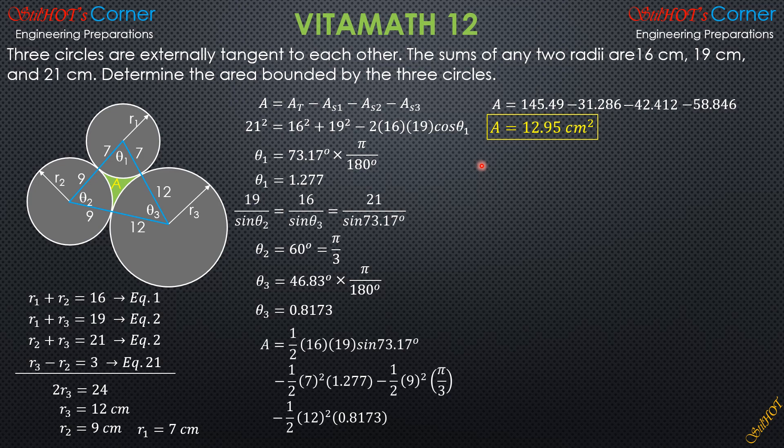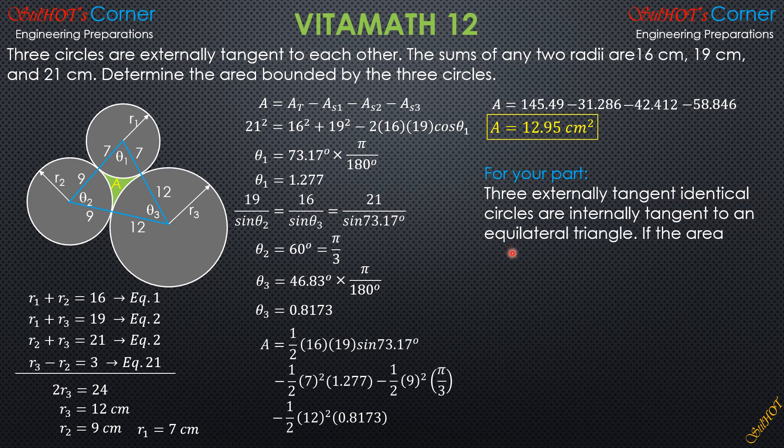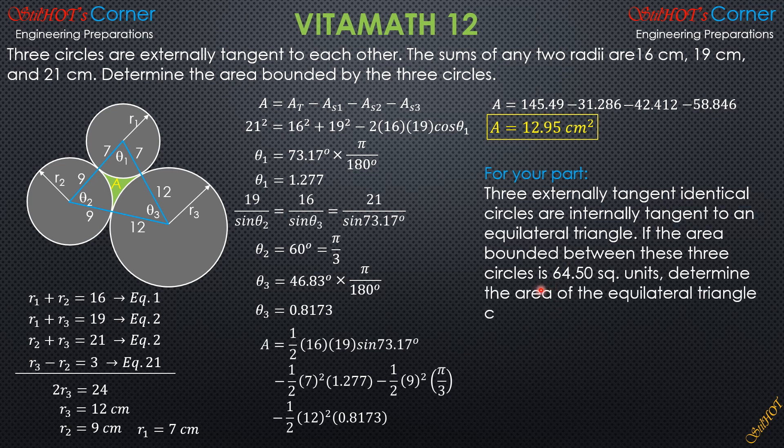Now, for your part, so that you will also learn from my channel, here is your problem. Three externally tangent identical circles are internally tangent to an equilateral triangle. If the area bounded between these three circles is 64.5 square units, determine the area of the equilateral triangle circumscribing them. That's for your part. And the answer is, I want you to get this answer: 171 square units. Thank you.